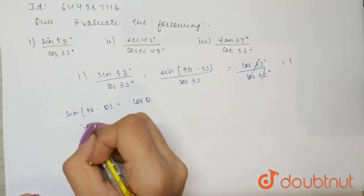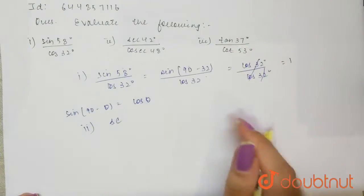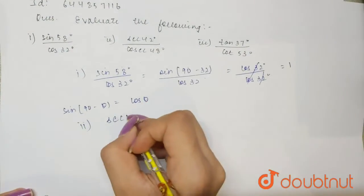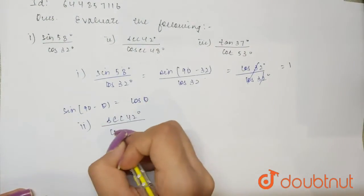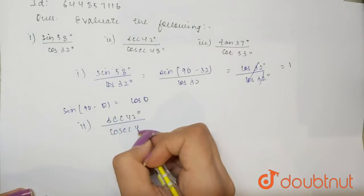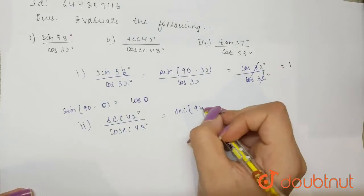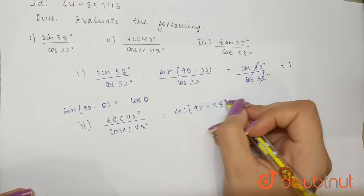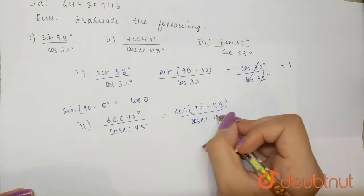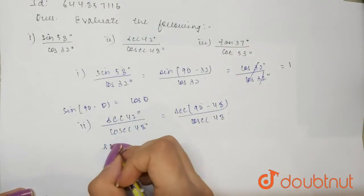I can write this as secant of (90 - 48)° divided by cosecant 48°. Now we know